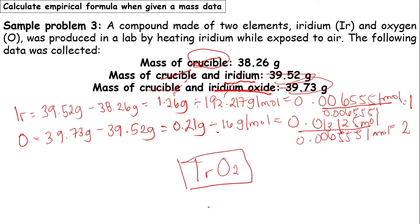Can we get the molecular formula for this? No, since the mass of the unknown compound is not given. Remember, to get the molecular formula, we have to get the molecular weight of the empirical formula, then divide it by the mass of the unknown.